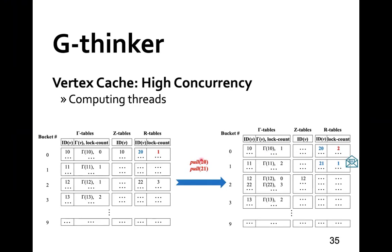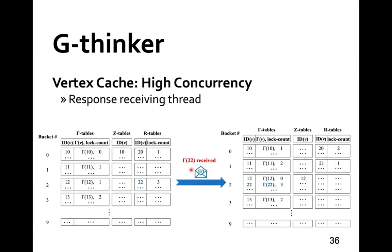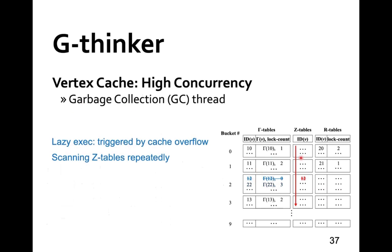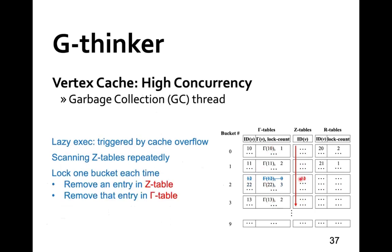If a task requests vertices 20 and 21 not already in gamma tables, we add them to R table. Vertex 20 is already in R table, so we simply increment its counter to avoid sending a redundant request, while vertex 21 is a newcomer and the request is added to the sending queue. When vertex 22's adjacency list arrives and R table shows 22 already has three task requests, we move this entry with counter 3 to gamma table. We also have a garbage collector that periodically scans Z tables to evict vertices — this avoids scanning the larger gamma tables, which would reduce concurrency. Evicted vertices are removed from both Z table and gamma table.